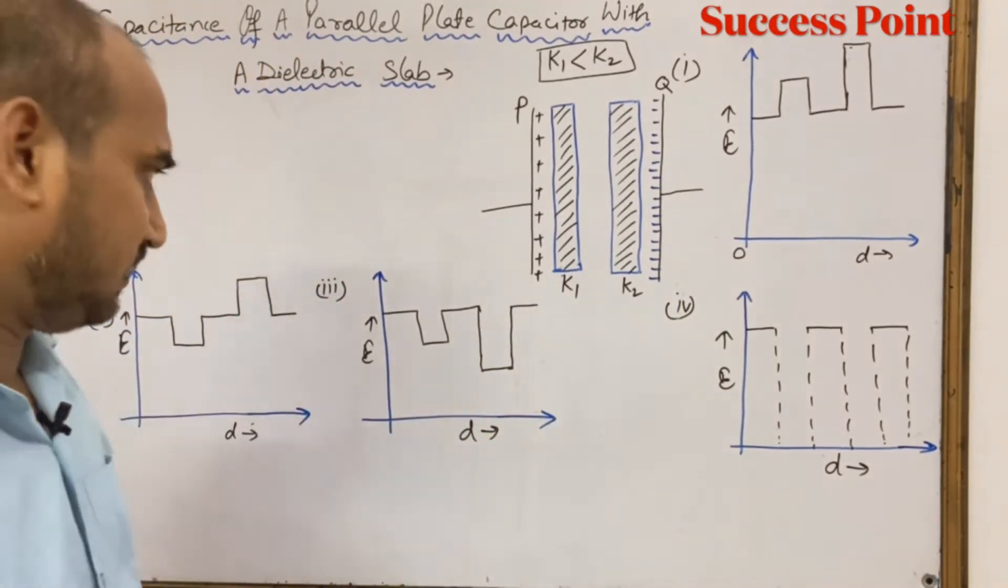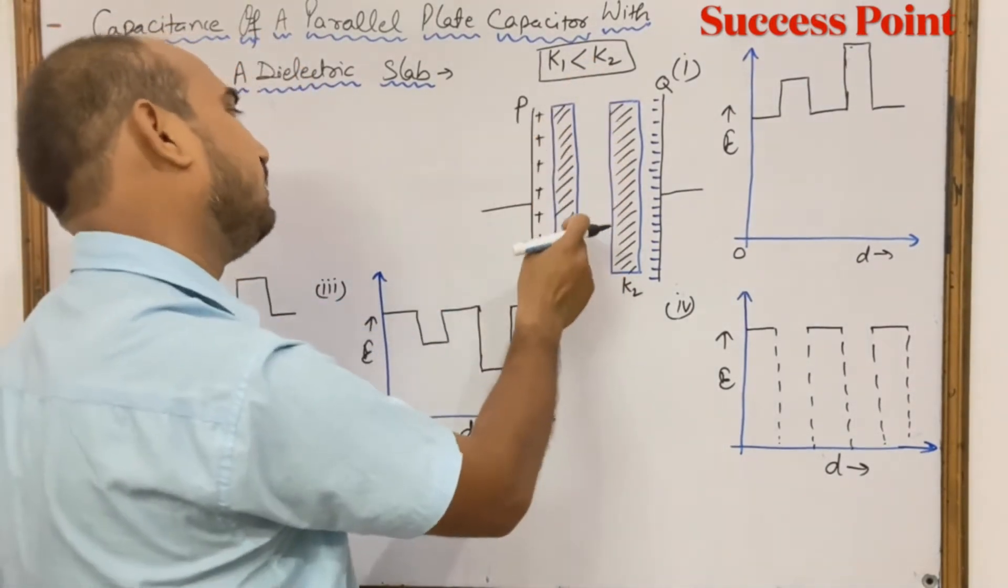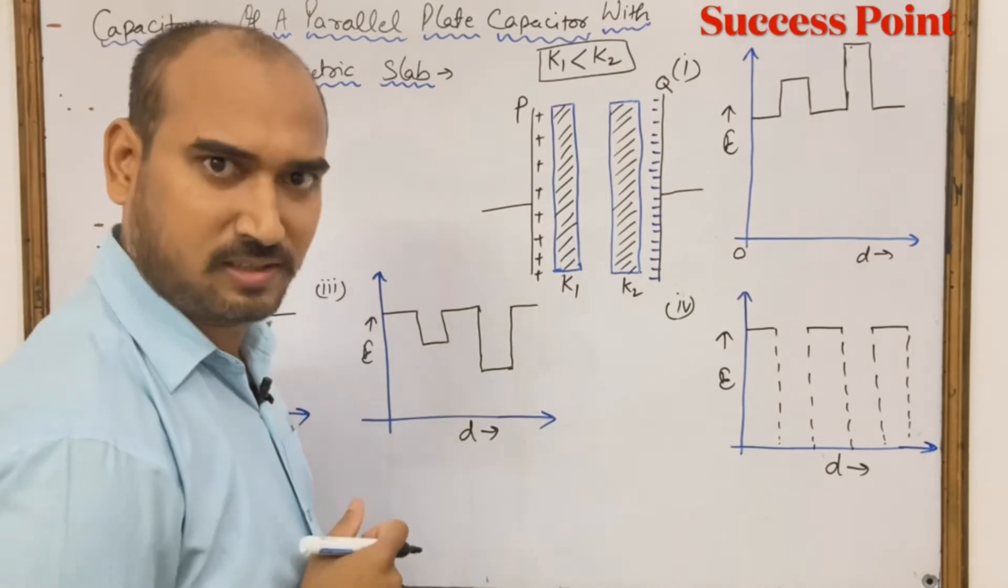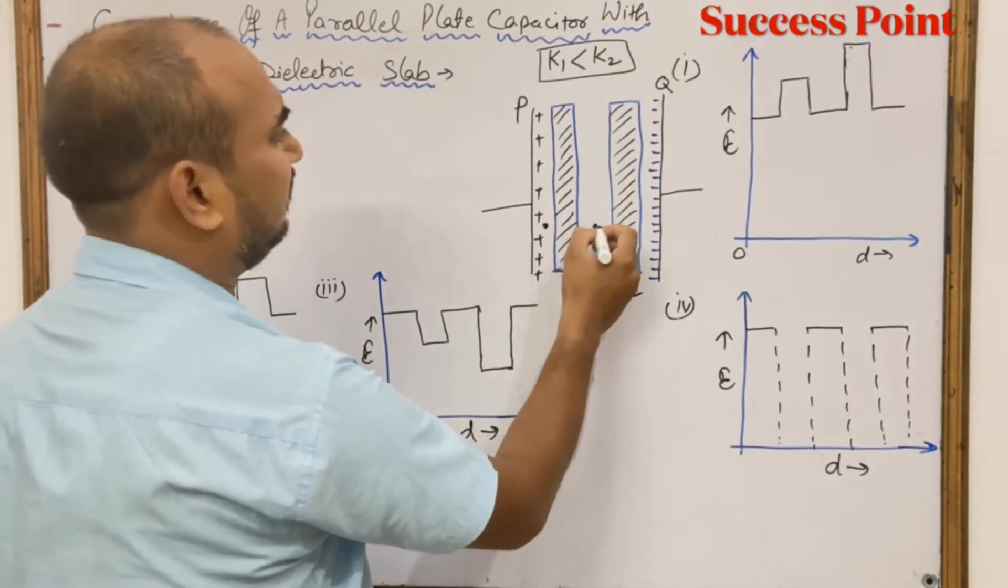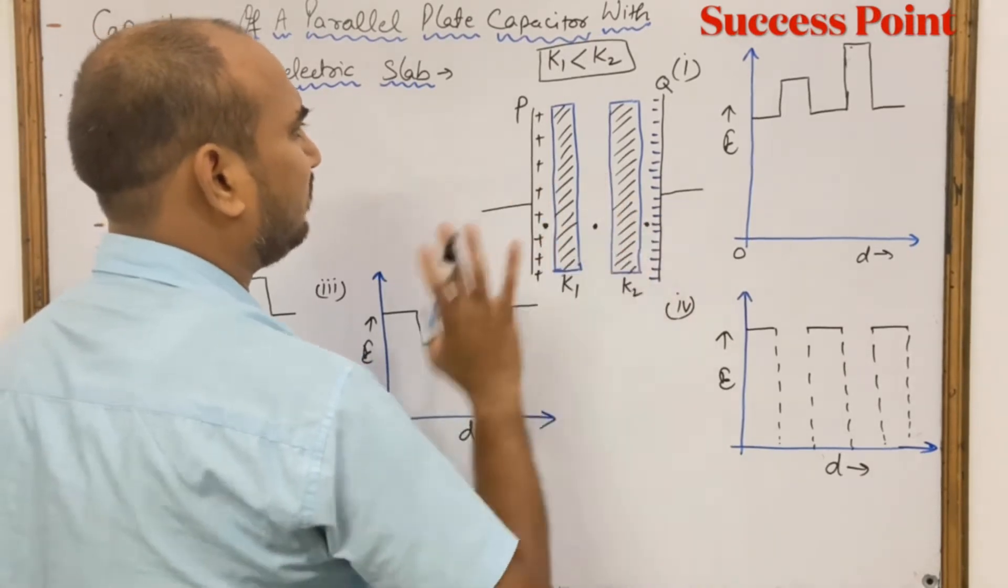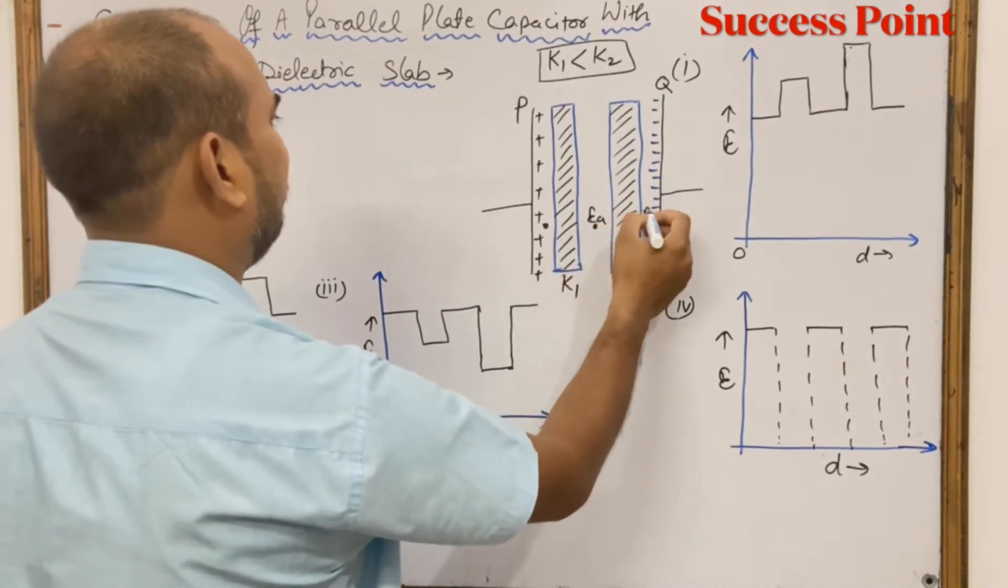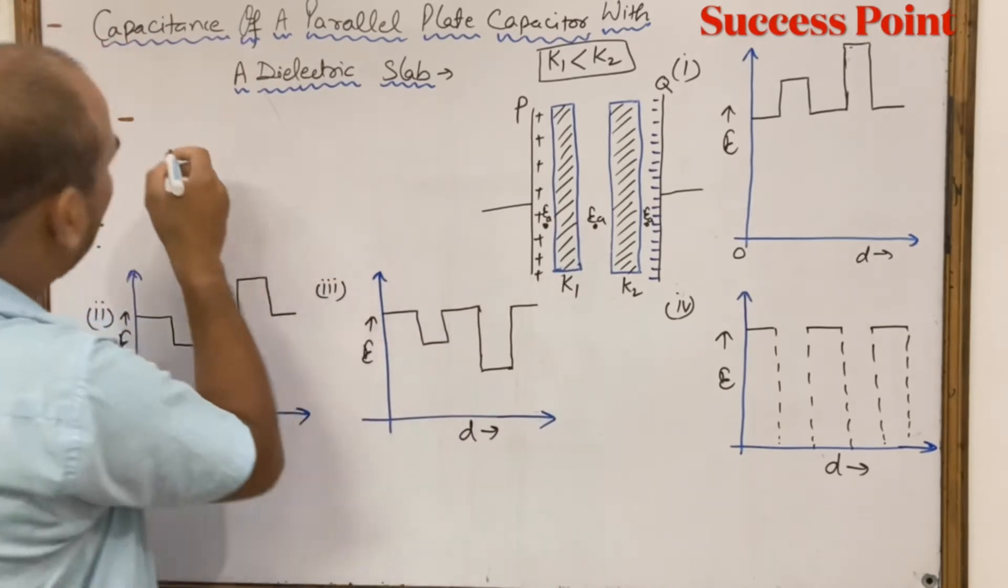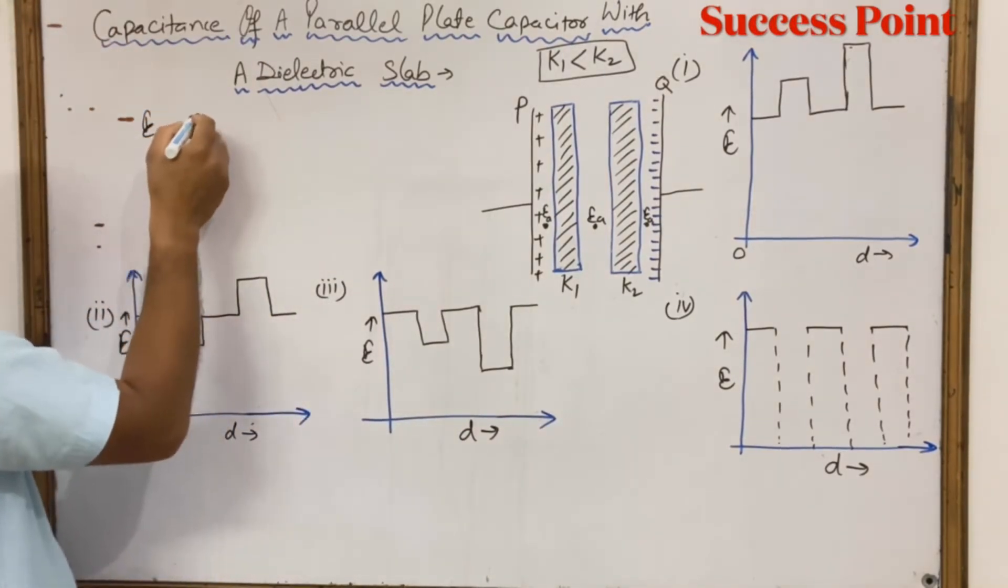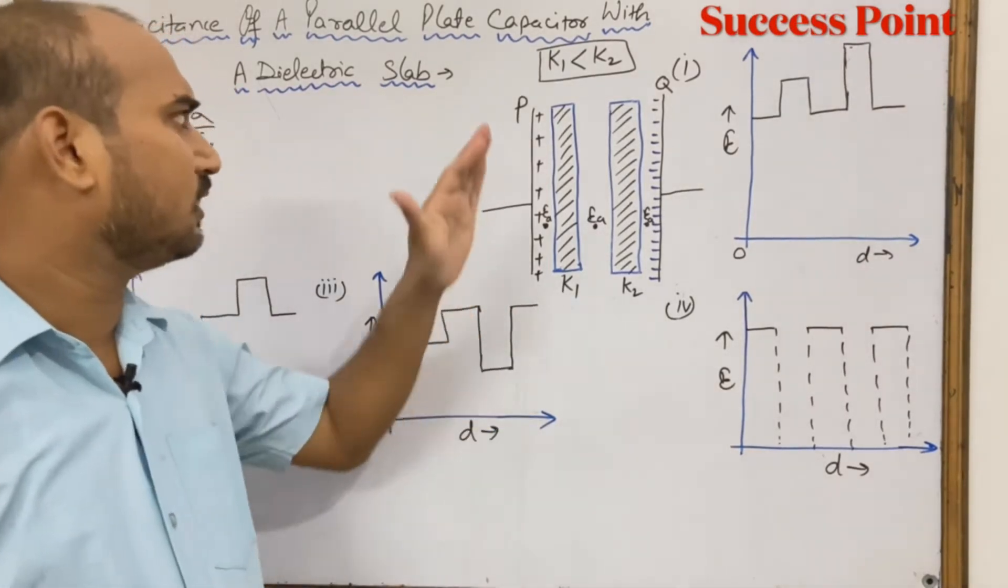There is one region with air, so there is electric field in that region. The air electric field is the same everywhere. This is Ea, the electric field in air, which equals sigma upon epsilon zero, where sigma is the surface charge density, which is Q upon A.